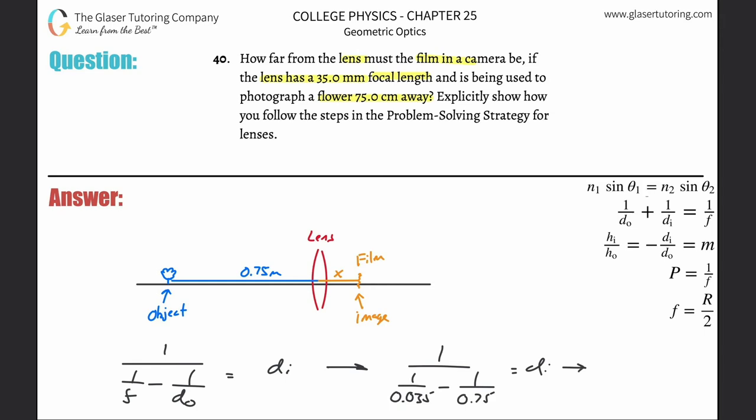Let's see what we get. One divided by 0.035 minus one divided by 0.75, and then take that value and divide it into one. That's going to be 0.0367 meters. If you need centimeters or millimeters, you know what to do.